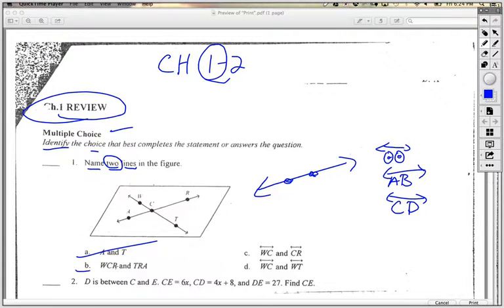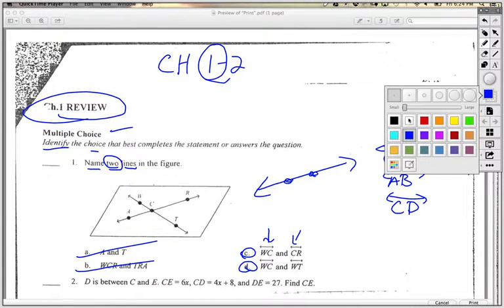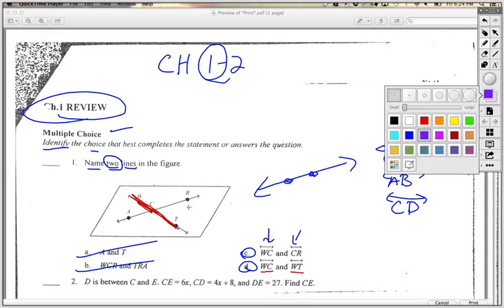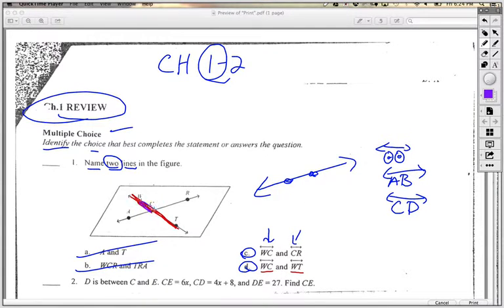I could automatically cancel out A and B because only C or D make sense, because those have lines in them. Let's see what these labels mean. This one says W, C, and W, T. So W, C, and W, T. That's kind of different because that's really just the same line overlapping itself. But then let's see what the other one is. The other one would be W, C, and C, R. That would be the two lines there. Instead of just giving me one line in two different ways, now it's naming two lines. So the answer then would be C, W, C, and C, R. Okay, that was easy enough.